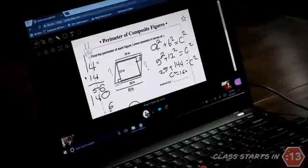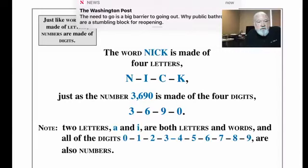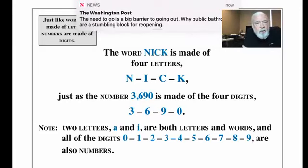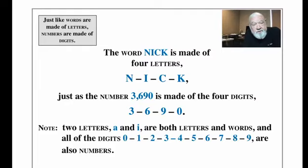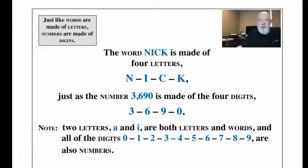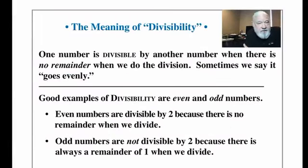Good day and welcome to the Mathnasium Schoolhouse. My name is Larry. Today we're going to turn our attention to divisibility rules — those almost magical rules that allow us to know when one number divides into another without actually having to do the division. There's an analogy here: the word 'nick' is made up of four letters N-I-C-K, just as the number 3690 is made up of four digits: 3, 6, 9, and 0. Words are made up of letters and numbers are made up of digits.